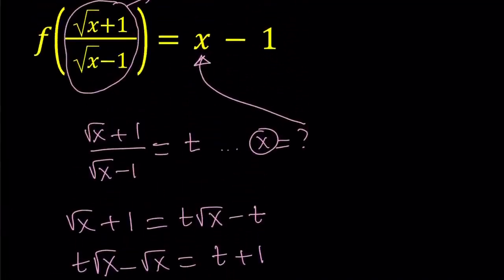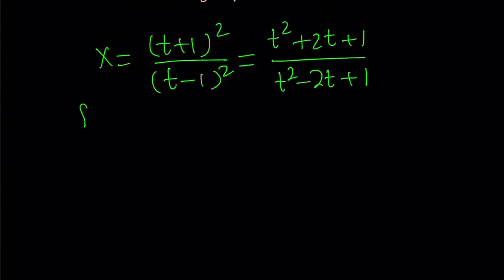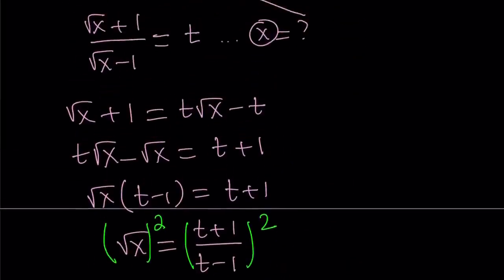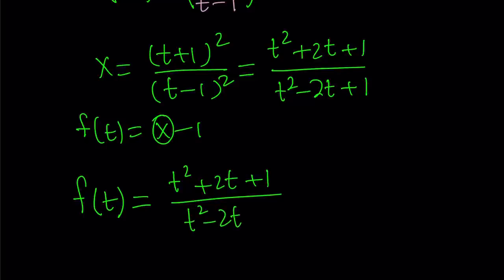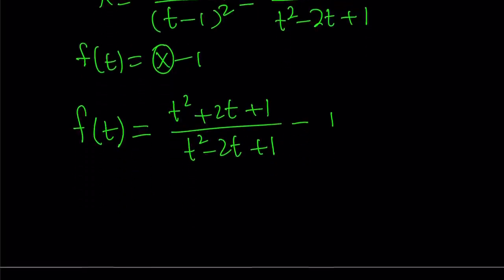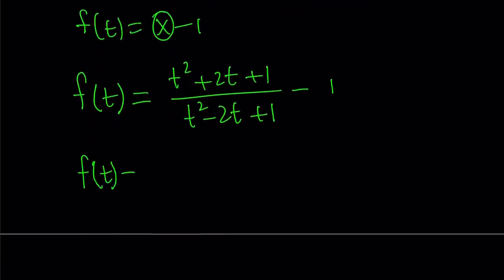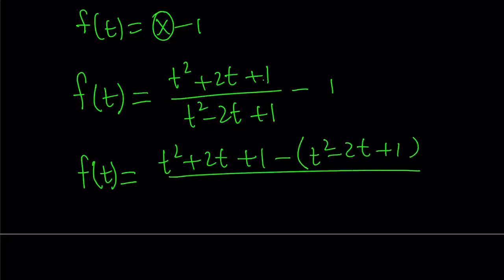And I can write it as t squared plus 2t plus 1 divided by t squared minus 2t plus 1. Our goal is to find x, but we still have to substitute that. So from here, we had f of t, remember, we got f of t equals x minus 1. This is true. Now we're going to replace x with what it is. So replace x with t squared plus 2t plus 1. That's the power of substitution. Gigantic expressions can turn into single variables.